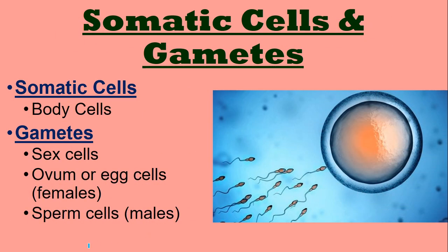Alright, so before we get into it — you have two main types of cells in your body. You have your somatic cells and your gametes. Somatic cells are your body cells, so we're talking stuff like bone cells, skin cells, nerve cells, blood cells. Those are somatic cells, and they go through mitosis.